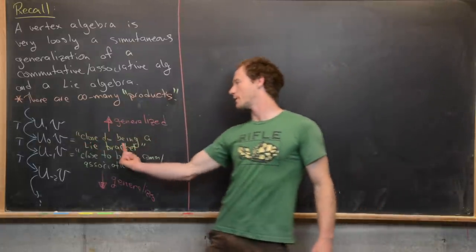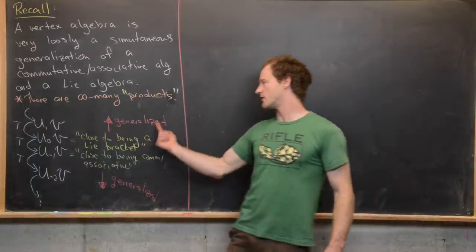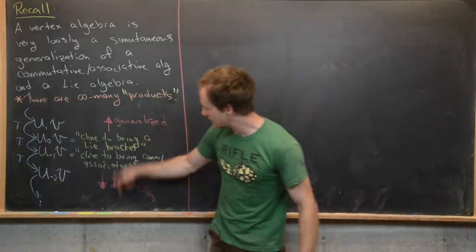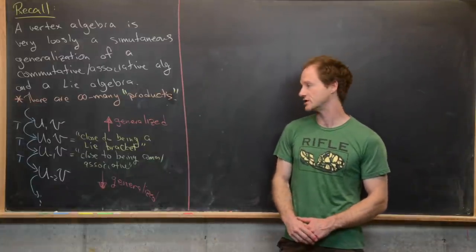And then if you go up in that direction to u₁, u₂, so on and so forth it's a further generalization of the Lie bracket. And then if you go down in that direction it's like a further generalization of this commutative associative multiplication.